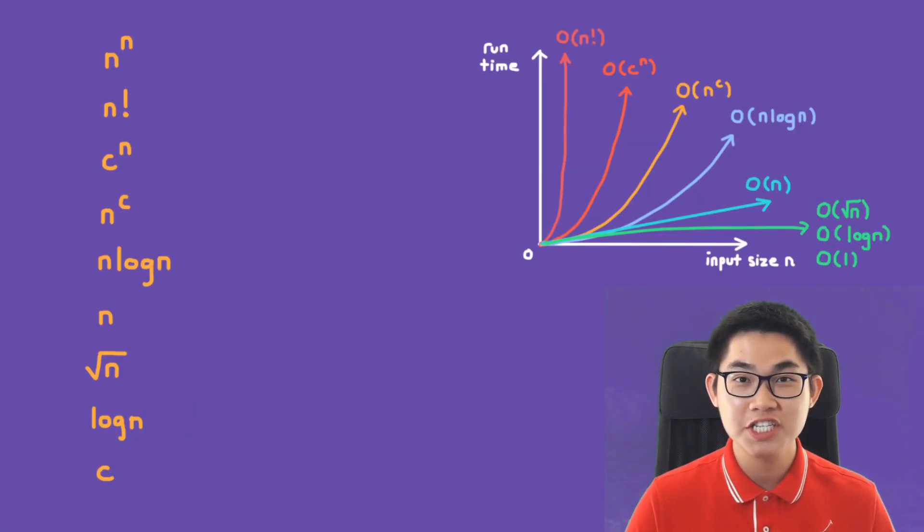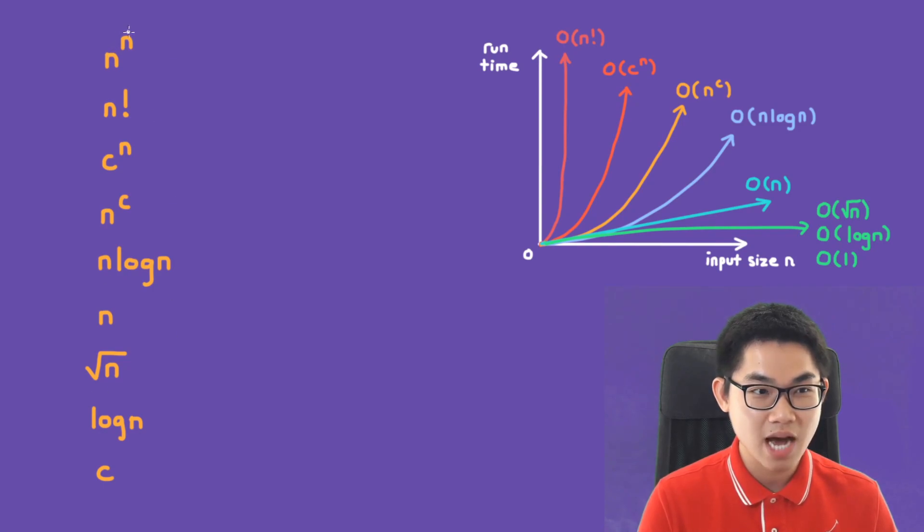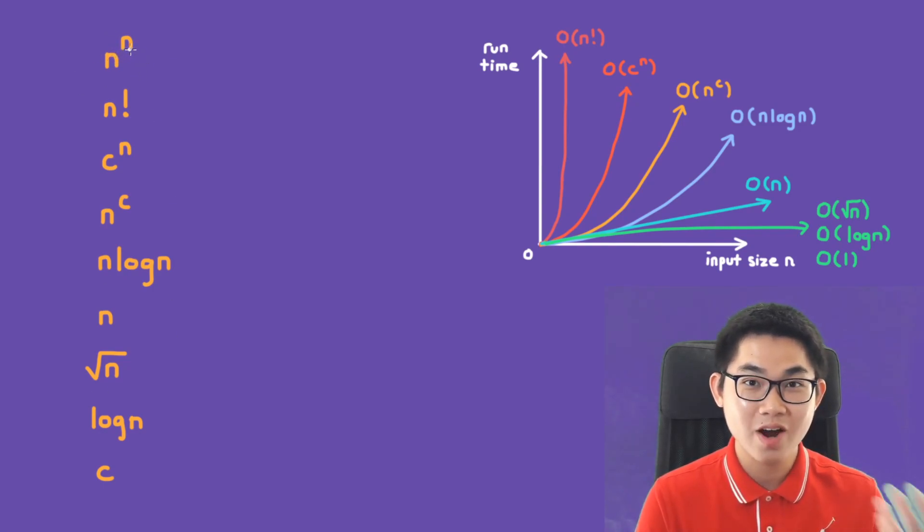So how can we know which function is larger than which one? You can look at this list here. The top function is the one that is the largest or grows the fastest. And the bottom one is the smallest or grows the slowest.